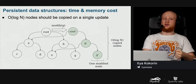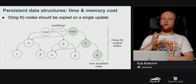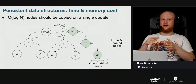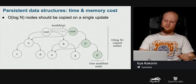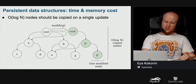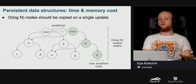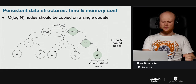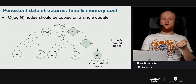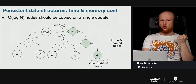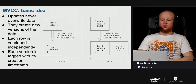What is the problem with persistent trees? On each update we copy a logarithmic number of nodes — one for each node on the path from root to the modified node. Can we design a solution where a single-value update copies only one element? The solution is called multi-version concurrency control, or MVCC.